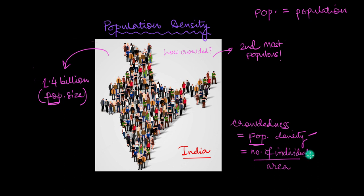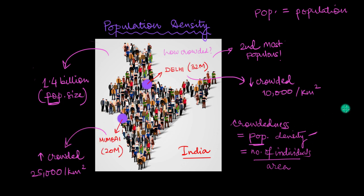It's the number of individuals per square mile or per square kilometer of an area. Now, a place may have a very high population size but not necessarily a very high population density.